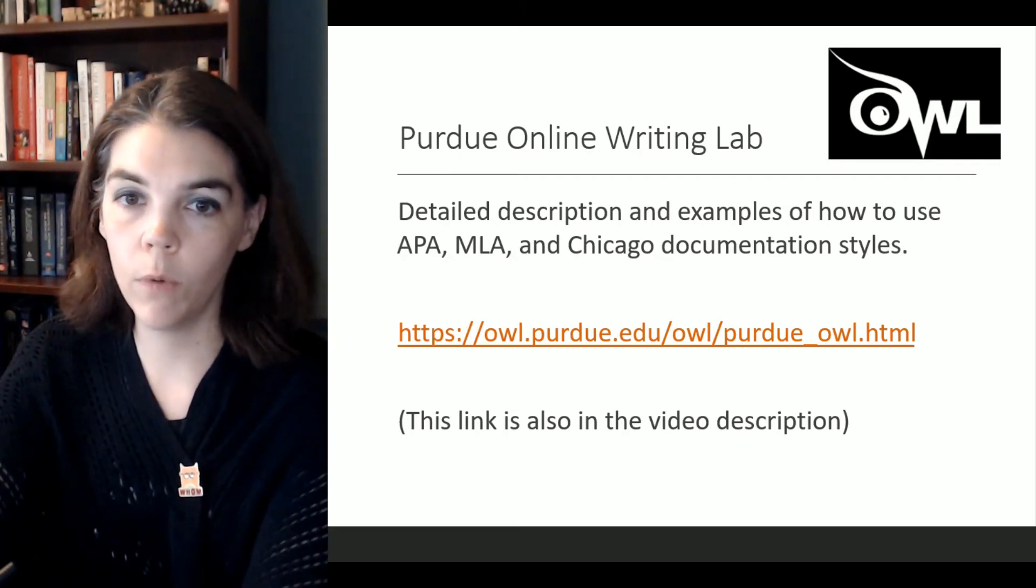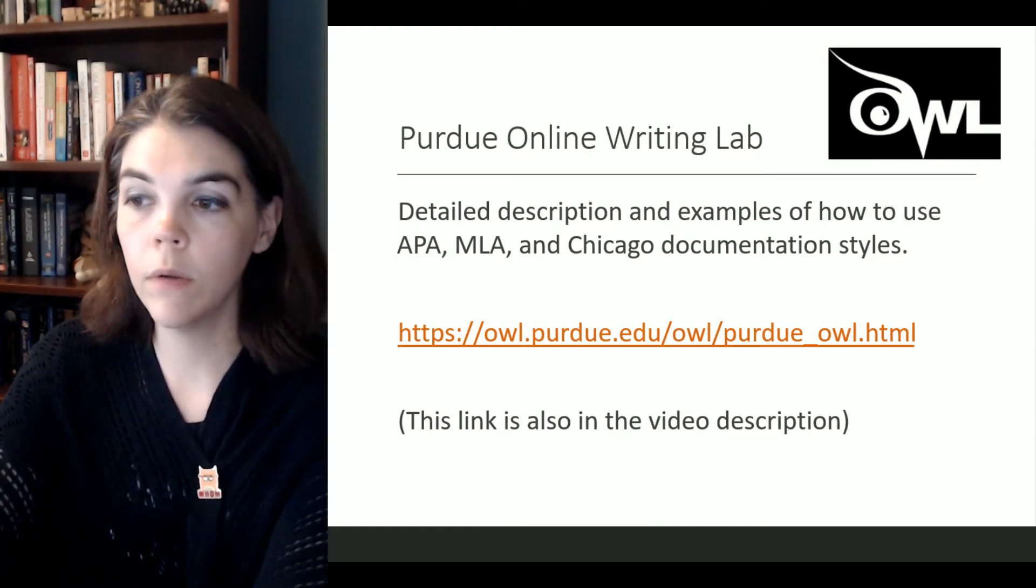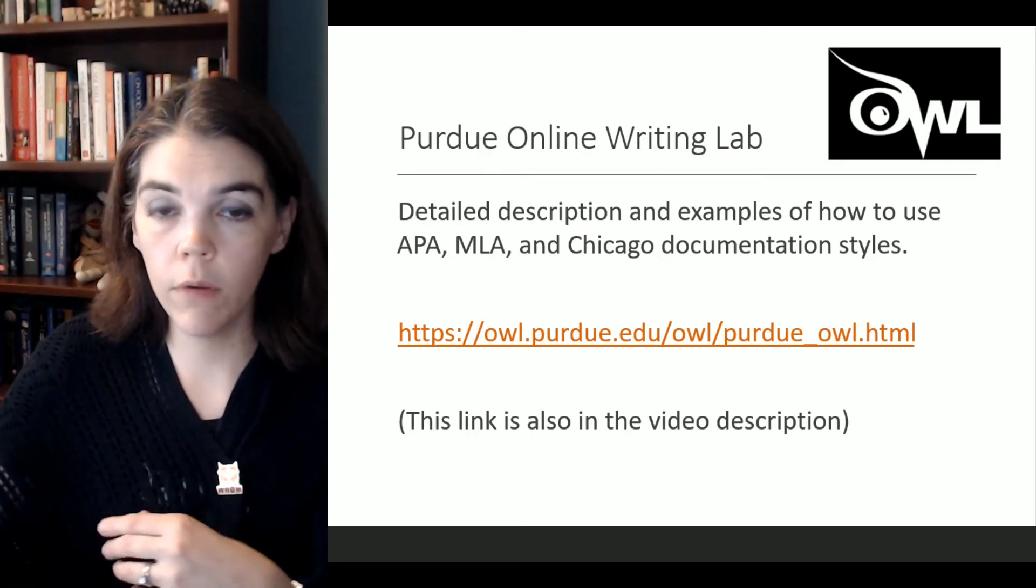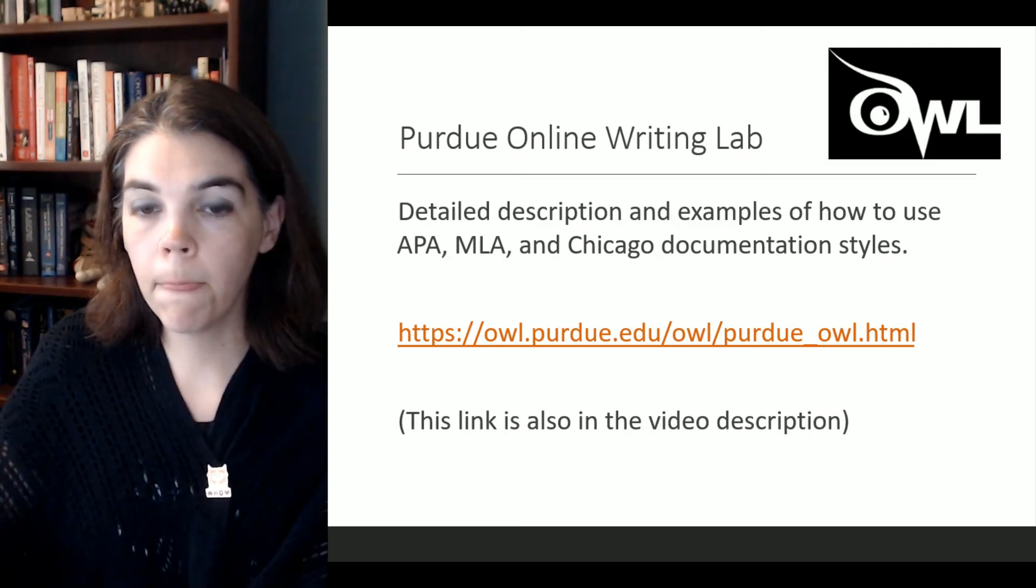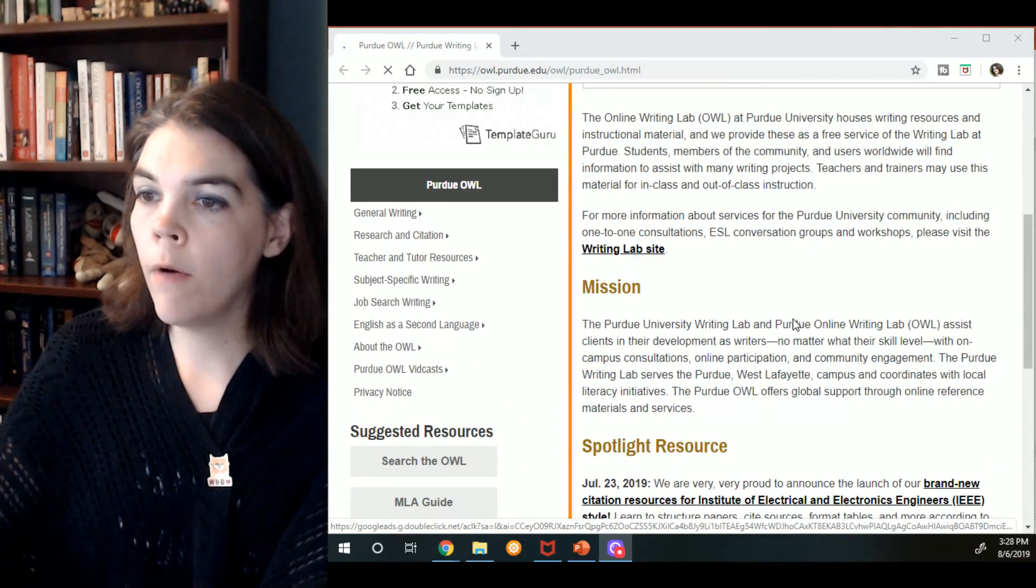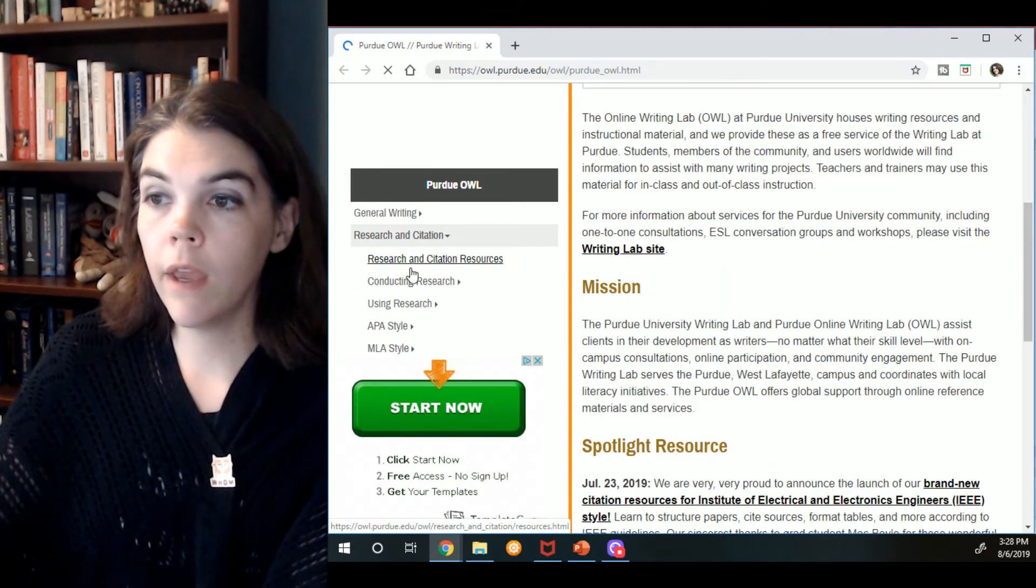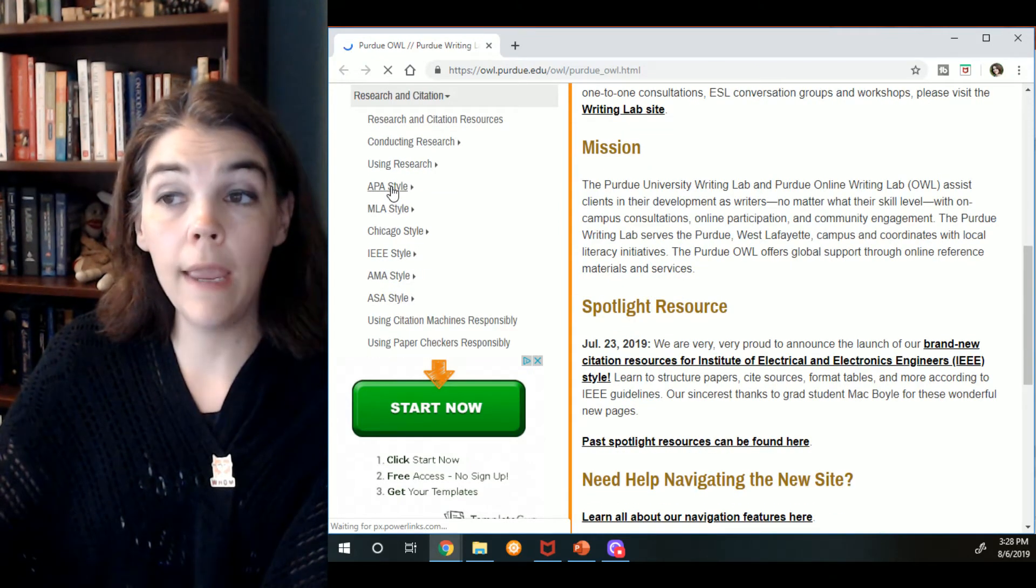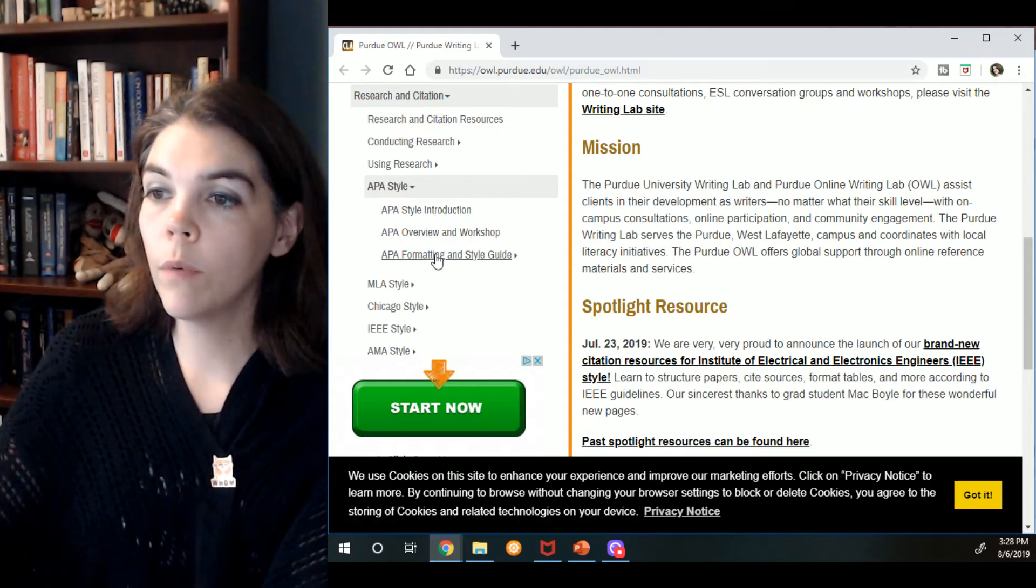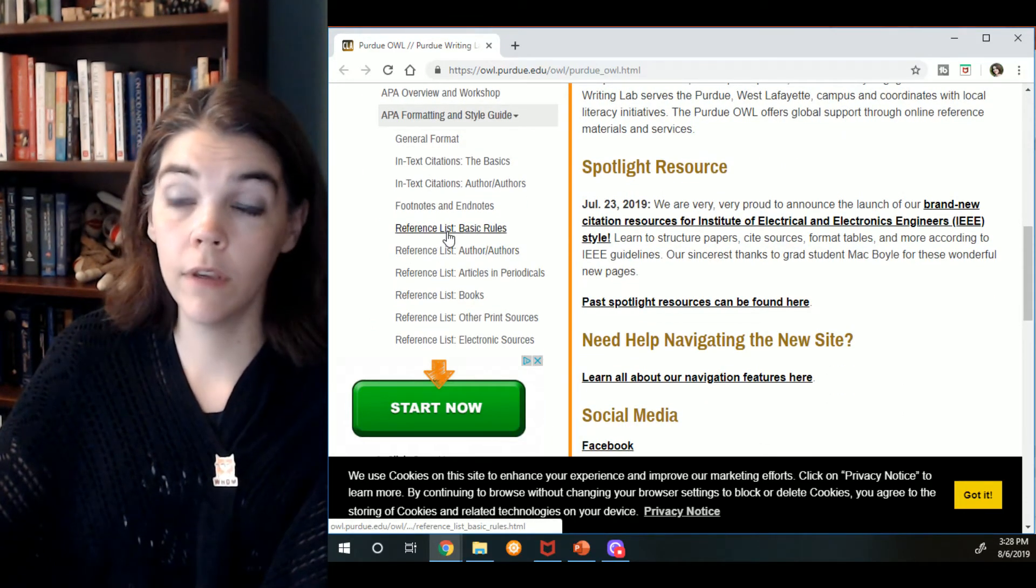I am also going to include this link and links to other videos to watch in the description of this video. And this particular source, let's just go there now for just a moment so you can see it. So here is Purdue online writing lab as it appears right now. When you go to research and citation here, you'll see that you can look up APA style and there's an introduction and then an overview and workshop formatting. Maybe you just want some examples.